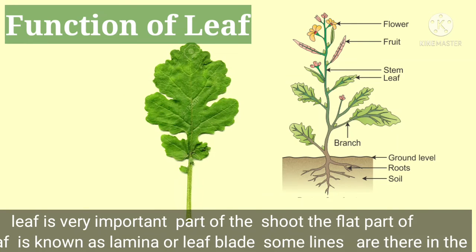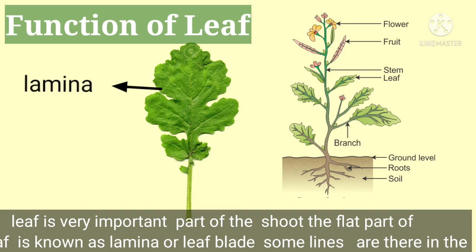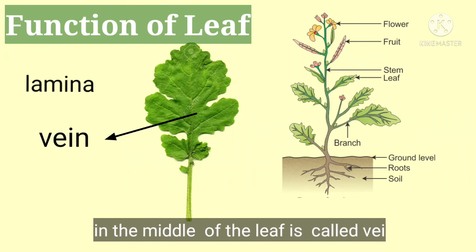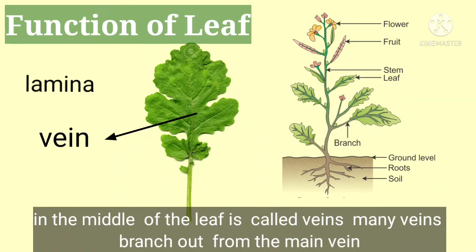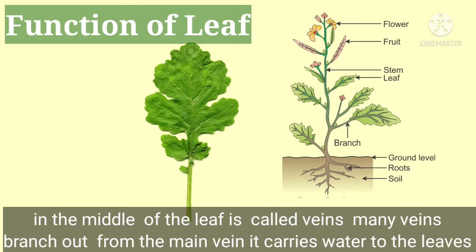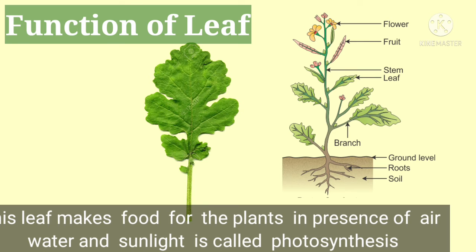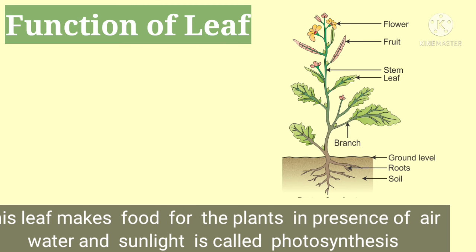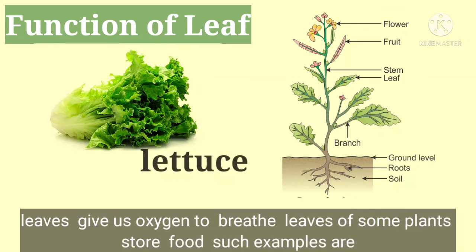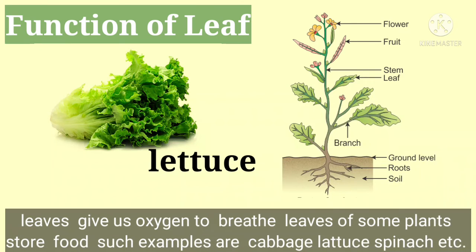The leaf is a very important flat part of the plant. The process by which leaves make food using nutrients from air, water and sunlight is called photosynthesis. Leaves give us oxygen to breathe.